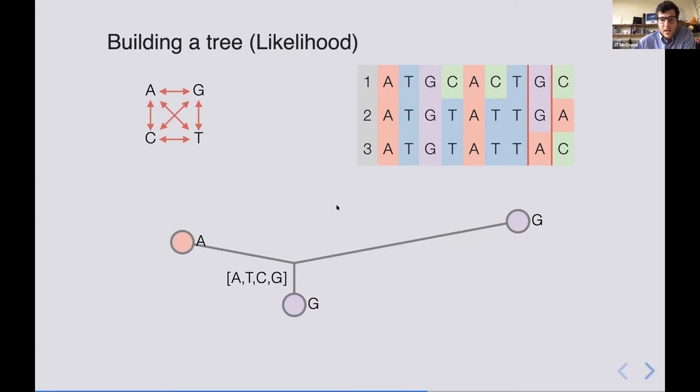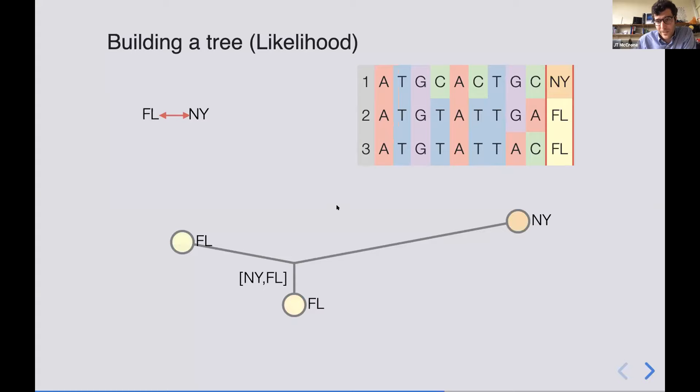And now we're also interested in where these samples are and how nucleotides change across the tree, but also how locations change across the tree. And so in an analogous method, we can include an extra column in the alignment that represents location. So here I have New York and Florida, and you can have some rate of change where Florida transitions to New York and vice versa, and you can include that in your calculations of the tree and begin to estimate maybe where was this node, was it more likely that it was in Florida than New York.